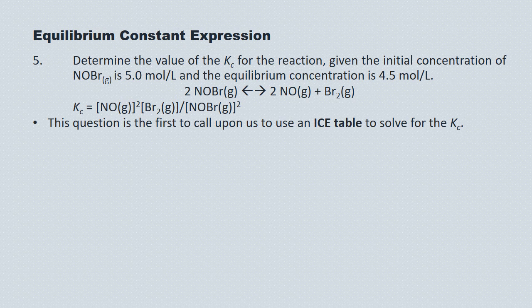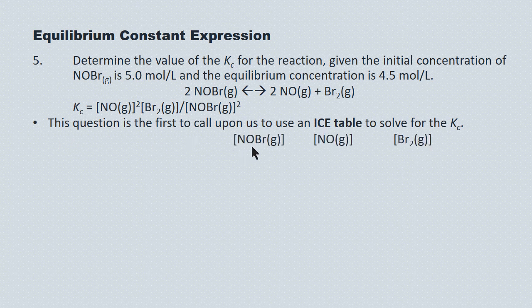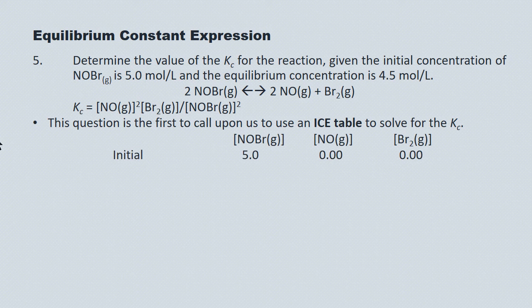An ICE table is simply a table of concentrations — I for initial, C for the change in concentration, and E for the equilibrium concentrations. Left to right, we draw columns for the molar concentrations of reactants and products of the forward reaction. We're given the initial concentration of NOBr at 5.0 mol/L, and since the question says nothing about the other concentrations, we assume those to be zero.